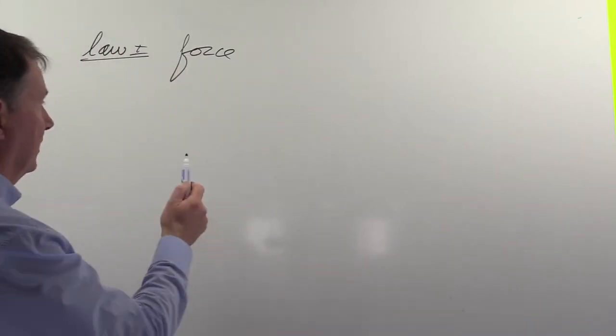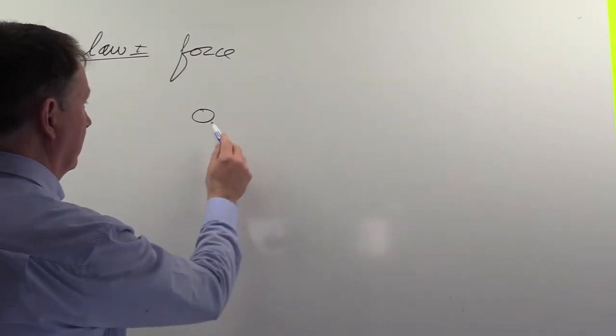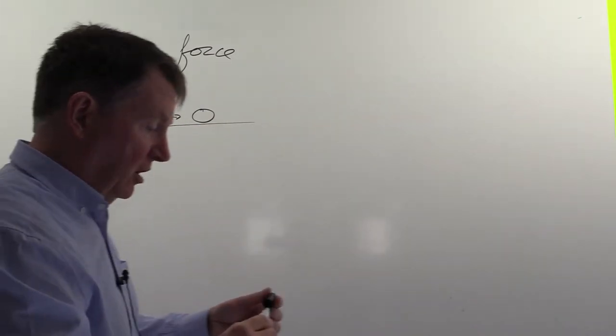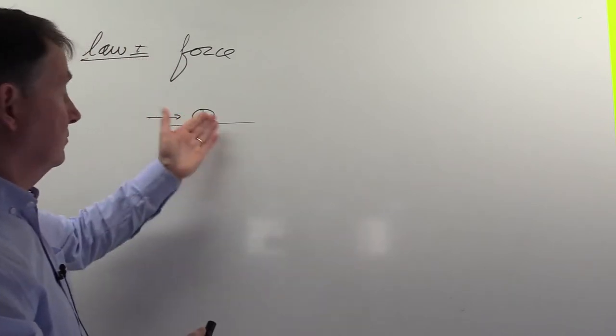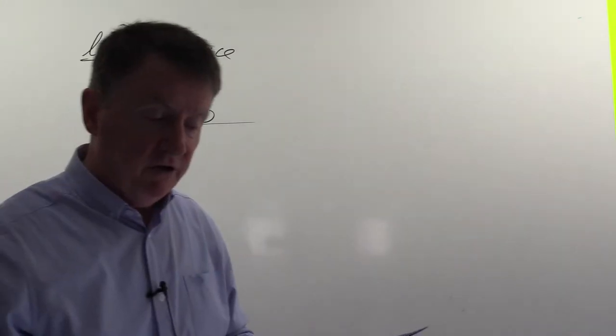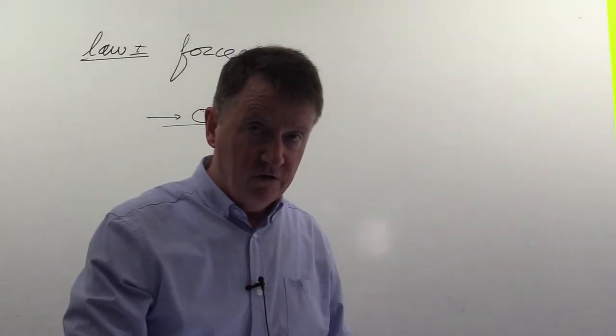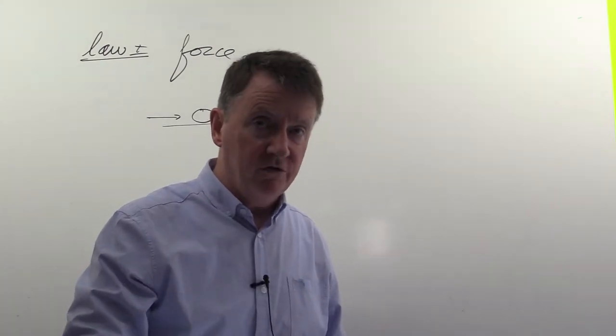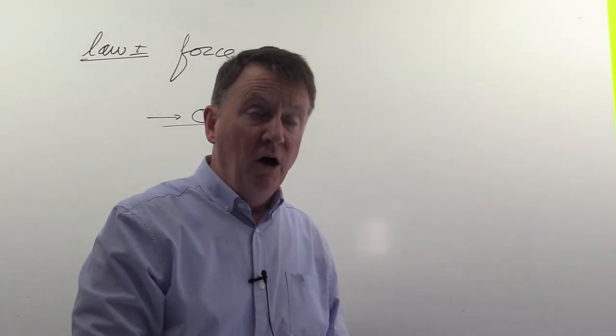So, for example, if I have a situation like this here, where I've got maybe a particle and it's actually stationary. Now, if I apply a force to it, basically, what's going to happen is it's actually going to move. But if you look at the actual statement of the law, the way I have it worded there for you, what we basically have is that a body continues in a state of rest or uniform motion in a straight line unless acted on by a resultant external force.